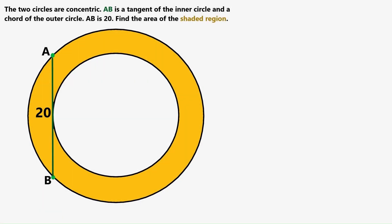In this super cool geometric problem, we have one circle inside another, and they are concentric circles, which means this circle and this circle have a common center. And this line AB over here is a tangent to the inner circle and a chord to the outer circle. And the length of AB is 20. And we need to find the area of the shaded region, which is this entire gold colored region between the two circles.